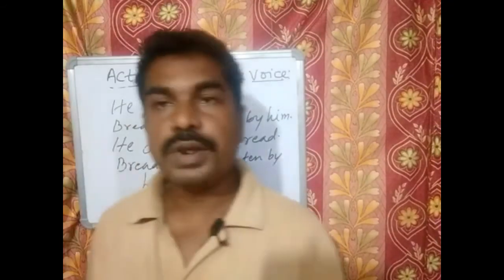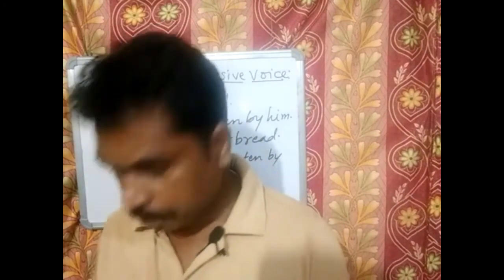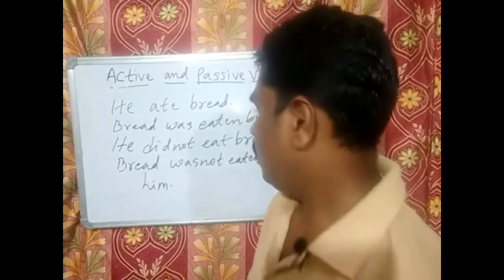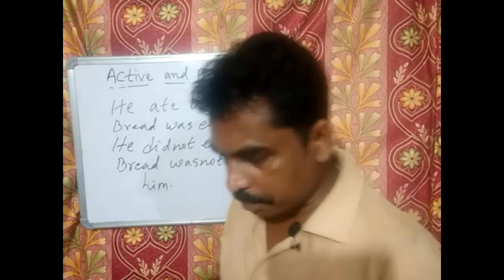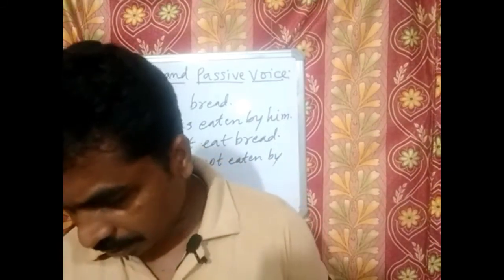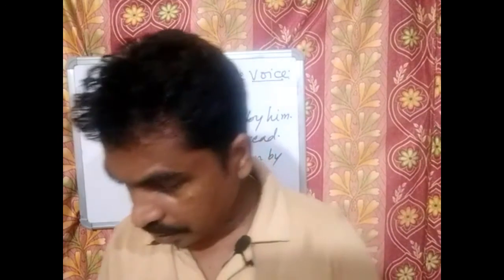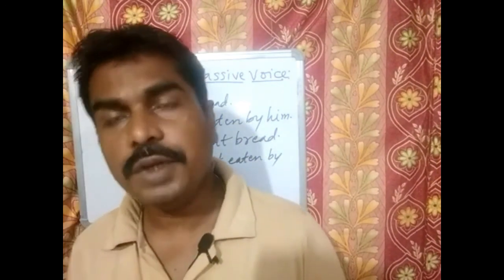In the past continuous form: 'I was reading a book' becomes 'A book was being read by me.' For the negative: 'I was not reading a book' becomes 'A book was not being read by me.' You have to place 'not' just before 'being.' In the past perfect form: 'I had read a book' becomes 'A book had been read by me.' For the negative: 'I had not read a book' becomes 'A book had not been read by me' — 'not' goes before 'been.'